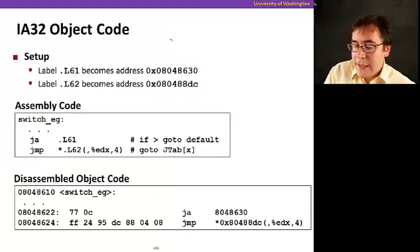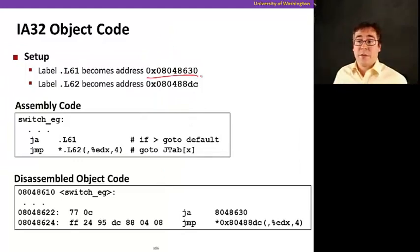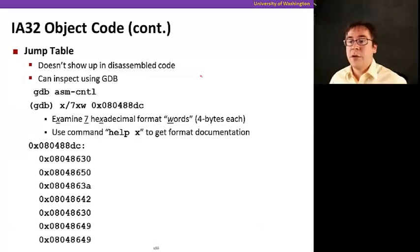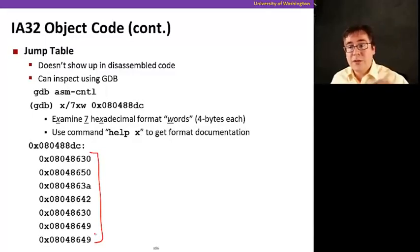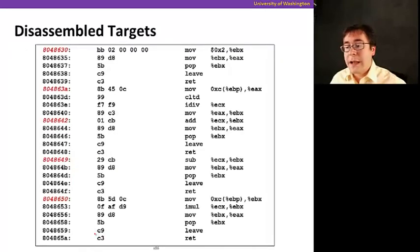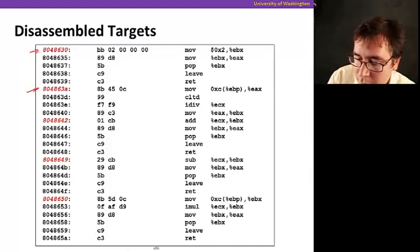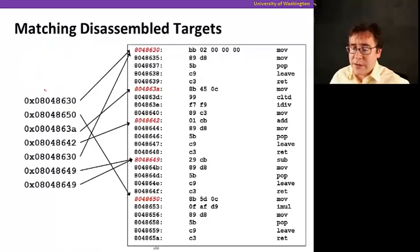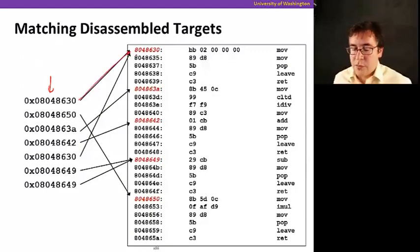If you look at the object code, the labels become instruction addresses chosen by the linker. There will be one address for each one of the case values in our switch statement. If you look at the entire table, you'll see one address per case statement. Each of those points at a code block, and you can see each one maps to a block of code corresponding to the code inserted in the case block for that value.